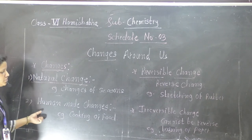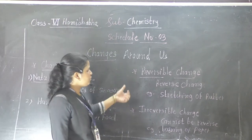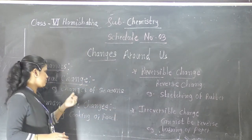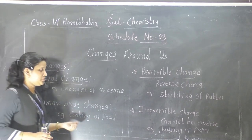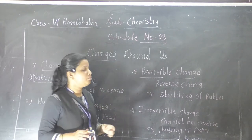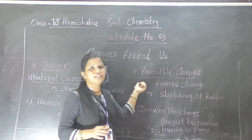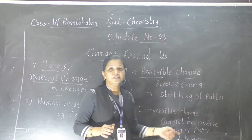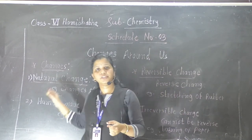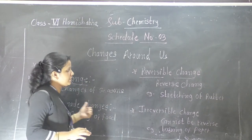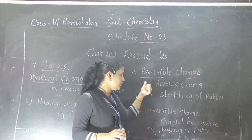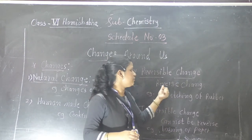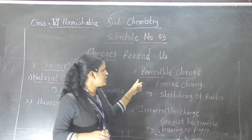Now, all these changes — natural and human-made — are grouped into two types. The first one is reversible change and the second one is irreversible change. Reversible change means those changes which can be reversed again.